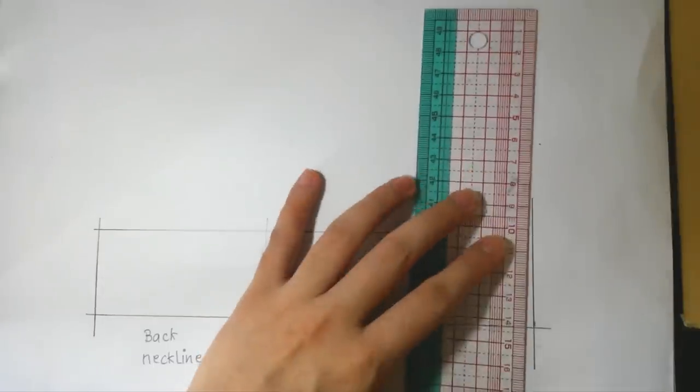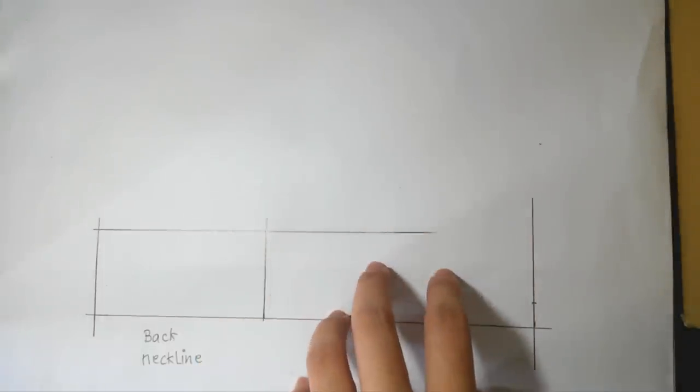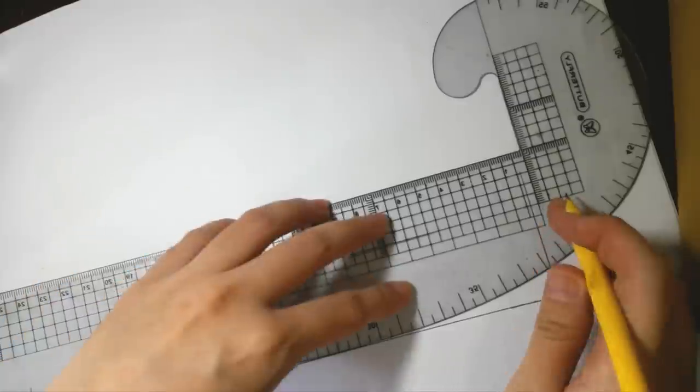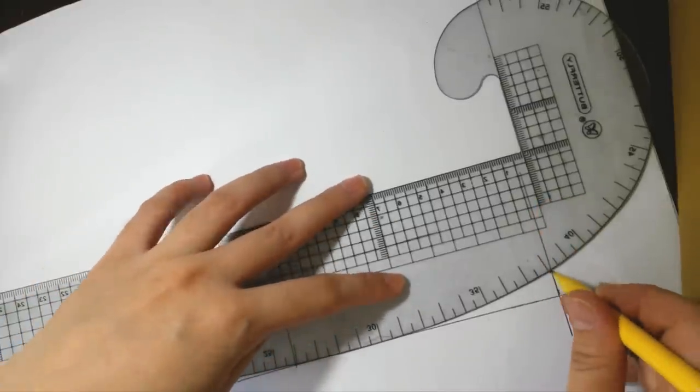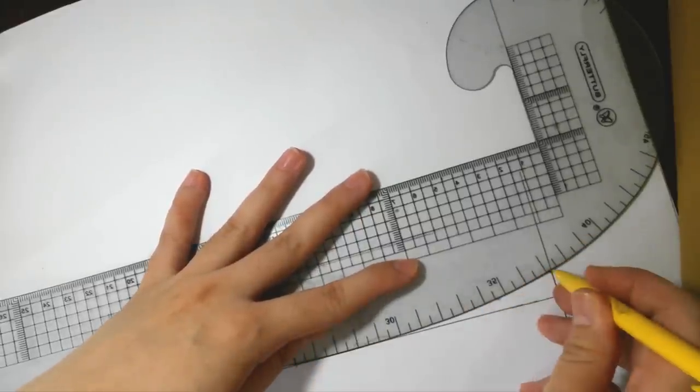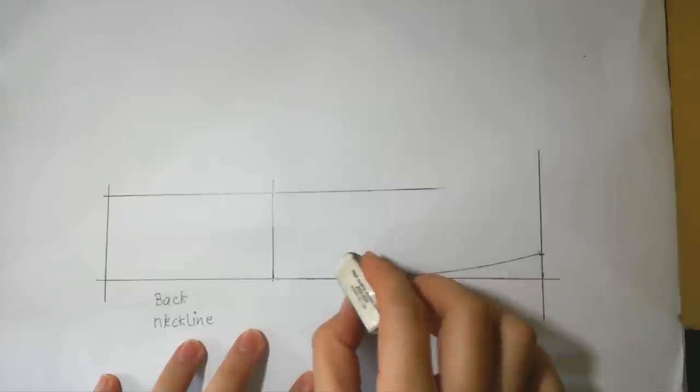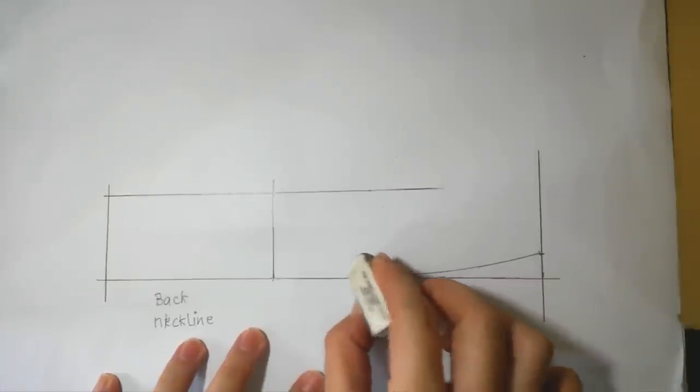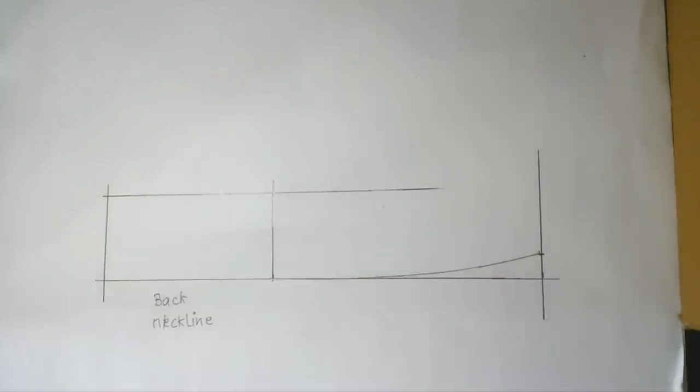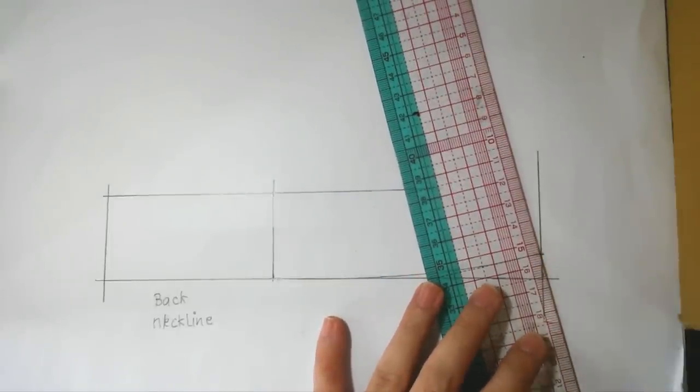From the corner, mark 1cm above the line, then use a curved ruler to shape the line. From the tip of this curved line, pull a perpendicular line up.